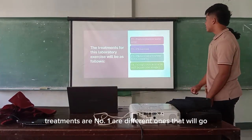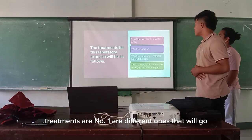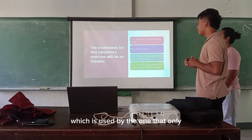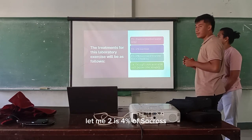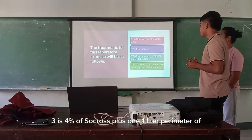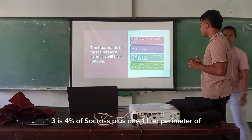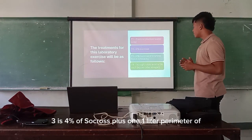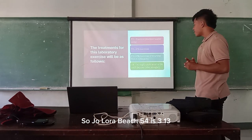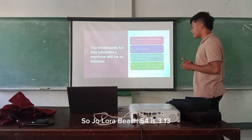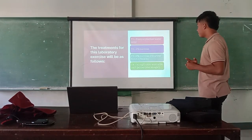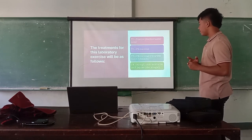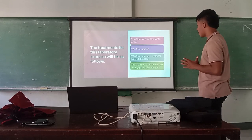The treatments are: Treatment 1 is the control, which uses distilled water only. Treatment 2 is 2% sucrose. Treatment 3 is 2% sucrose plus 1 milliliter per liter of sodium hypochlorite bleach. Treatment 4 is 30 mg per liter of citric acid, or 30 mg per liter of apple cider vinegar.